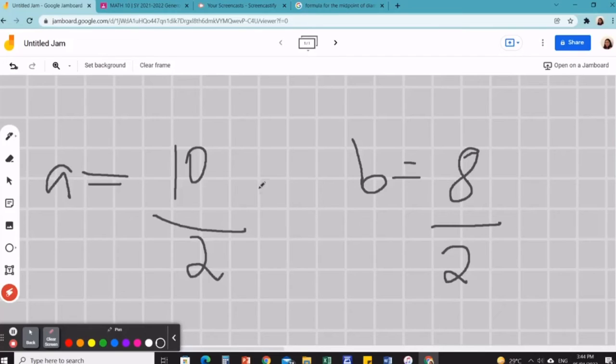And could you simplify this? Of course you could. 10 divided by 2 is 5, and 8 divided by 2 is 4. So there, we've got it. The simplest form.